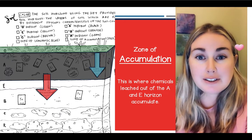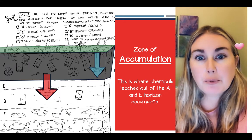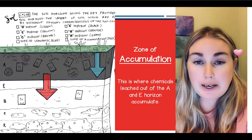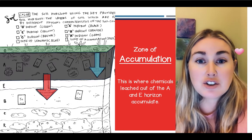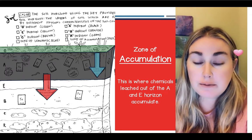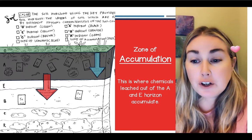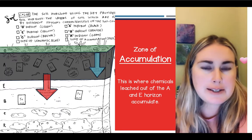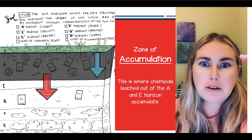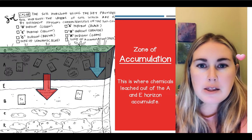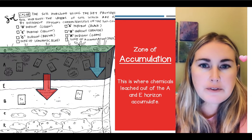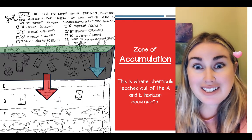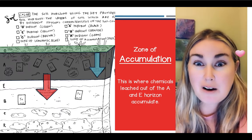Underneath the topsoil, we have another arrow pointing down. This arrow is going to be colored red and it is the zone of accumulation. The zone of leaching was taking nutrients out of the soil through the water, and the zone of accumulation is where those nutrients start to gather and build up as water moves through.